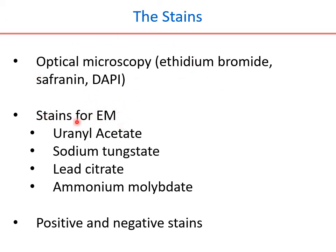In the electron microscope, stains work in an entirely different direction — this is what we call a negative stain. In optical or fluorescent microscopy the stain molecule interacts with the molecule of your choice (positive stain), whereas in electron microscopy the stain interacts with and stains the background of the molecule rather than the molecule itself — this is why the stain in the electron microscope is called a negative stain. Several chemicals are available: uranyl acetate, sodium tungstate, lead citrate, and ammonium molybdate.